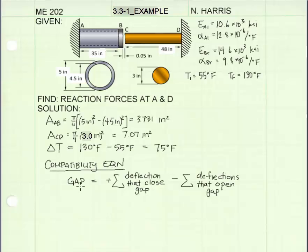I like to use the following guideline when writing a compatibility equation for problems like this. I like to write the gap on one side of the equal sign, and on the other, I like to add the deflections that close the gap and then subtract all the deflections that want to open the gap.